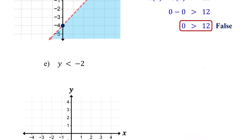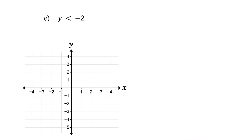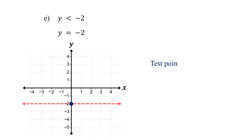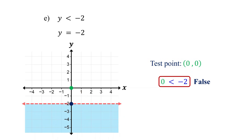Now let's take a quick look at cases where the boundary line is horizontal or vertical. As always, the first step is to graph the boundary line by replacing the inequality sign with an equal sign. The graph of y equals negative 2 is a horizontal line crossing the y-axis at negative 2. Since the inequality is strictly less than, use a dashed line. Next, shade the solution region — pick a test point that is not on the line. You can use 0 comma 0. Substituting it into the inequality gives 0 less than negative 2, which is false. So shade the region that does not contain the test point. That's your graph.